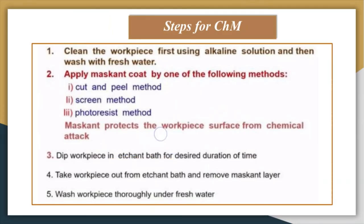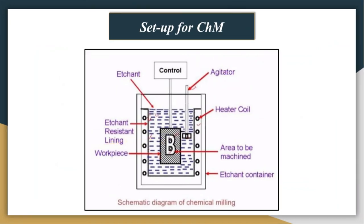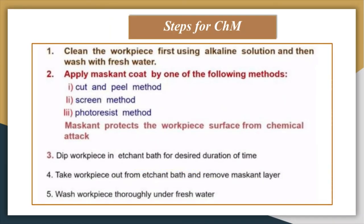In this case, the letter 'B' must be machined to a required depth. To decide how much time the machining will take, you need to conduct preliminary experiments. With the help of those experiments, you can determine how long it takes to remove the material to the desired depth from the work piece. Once that time is over, you can take the work piece out of the etchant bath.